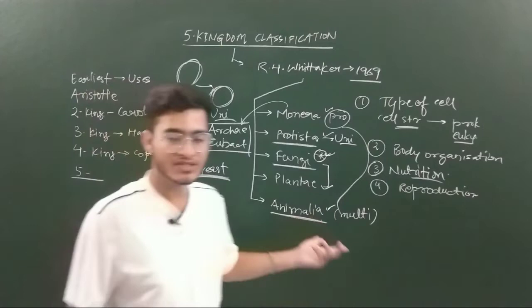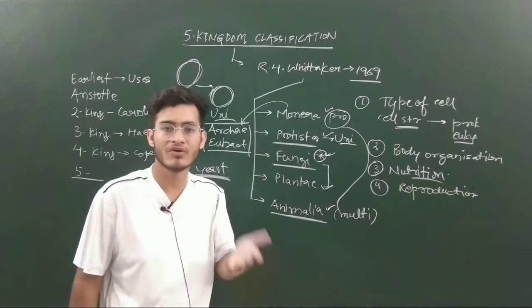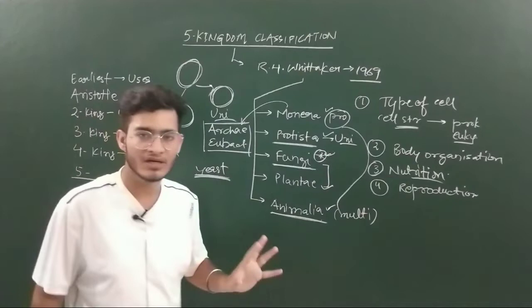Vegetative reproduction can occur with different vegetative propagules that we have already talked about in Chapter 1 of 12th class. Many things can happen here.